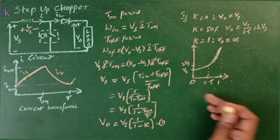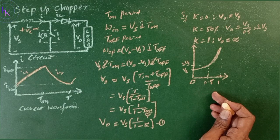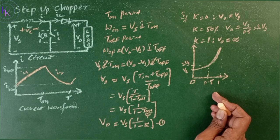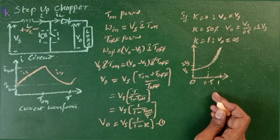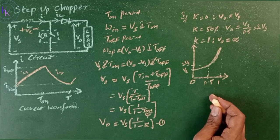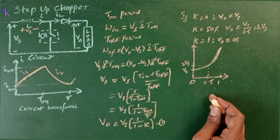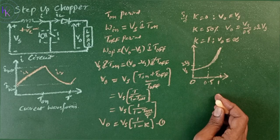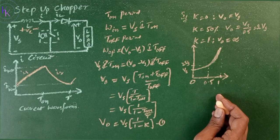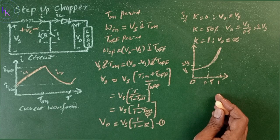This is the graphical representation of output voltage with respect to duty cycle K. The chopper cannot be switched on continuously such that K equals 1. For the values of K tending to unity, the output voltage becomes very large and it is very sensitive to changes in K.